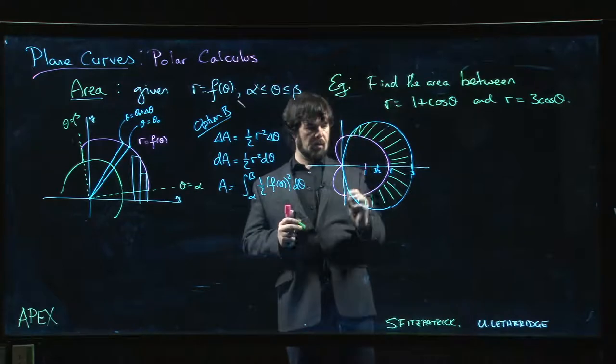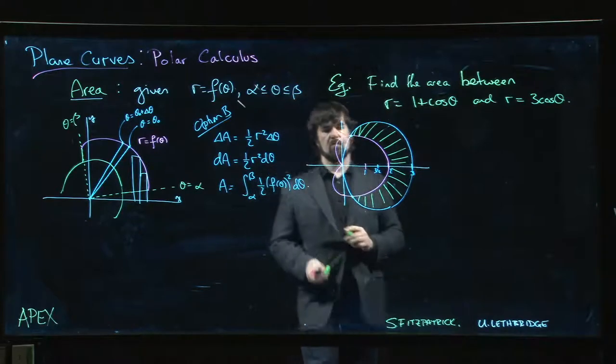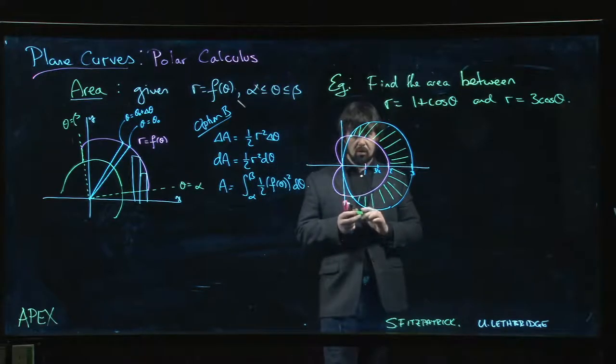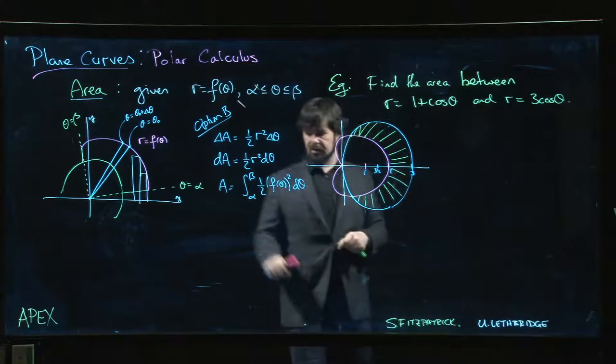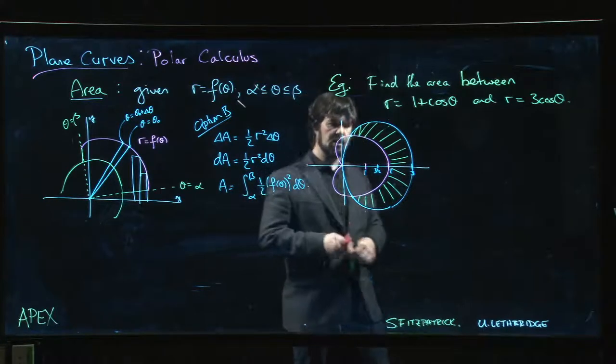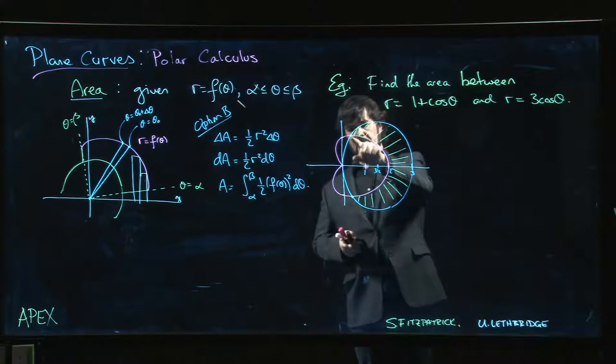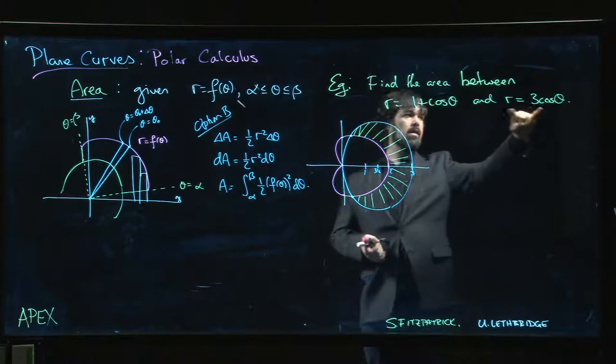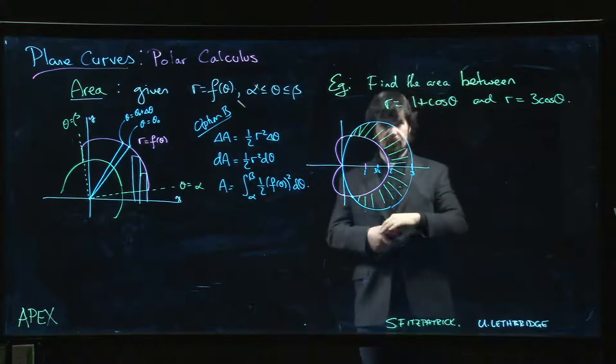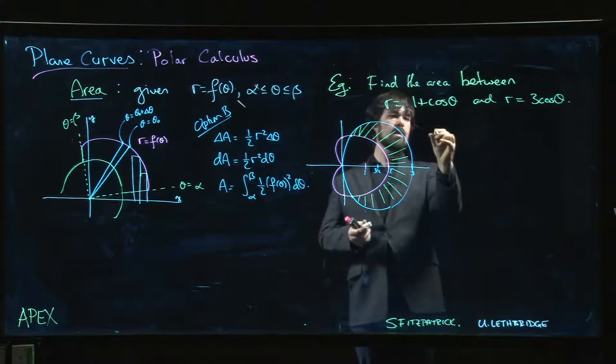And part of finding that area is going to be finding those two points of intersection because we need to know the limits of our integral. We need to know alpha and beta, where the integral begins and ends. In order to find those points of intersection, those are going to be when the R values for the two curves are equal.